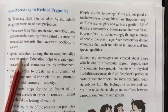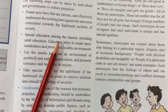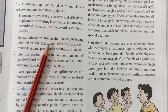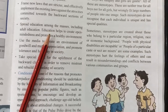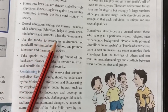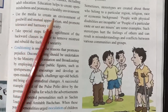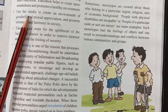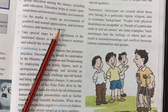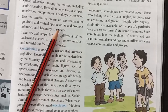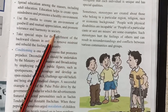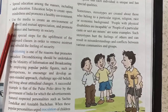Spread education — education will spread among the masses. The people who are educated will not be involved in passing judgment. If you are educated, you will know that this is wrong, and then you will not be involved in those things. Education helps you to create open-mindedness and provides a healthy environment. We can also use the media to create an environment of goodwill and mutual appreciation — a good environment. We will promote tolerance and harmony in society, with patience and balance, through media like TV, newspapers, and the internet.